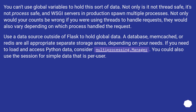You can't use global variables to hold this sort of data. Not only is it not thread-safe, it's not process-safe, and WSGI servers in production spawn multiple processes. Not only would your counts be wrong if you were using threads to handle requests, they would also vary depending on which process handled the request.